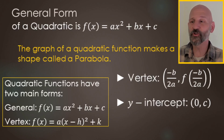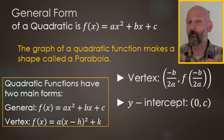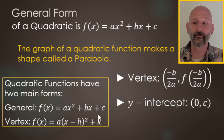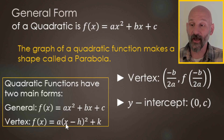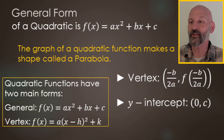Let's talk about general form for a quadratic: f(x) = ax² + bx + c. There's also a vertex form: f(x) = a(x − h)² + k, where (h, k) is the vertex. But we're working with general form for this video.